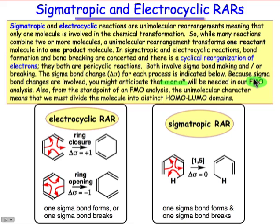Furthermore, because these are unimolecular processes, you might anticipate that both the HOMO and the LUMO will have to be contained within the molecule that's undergoing the rearrangement. We're going to see that we divide the molecule into distinct HOMO-LUMO domains.